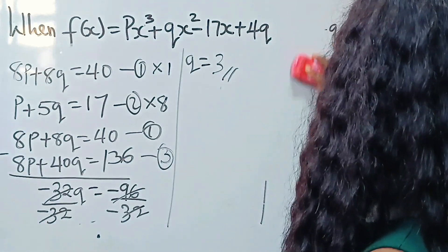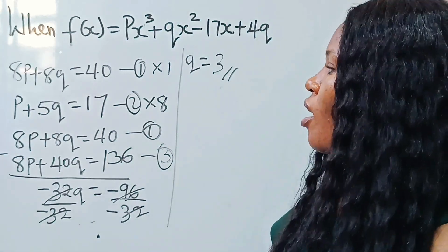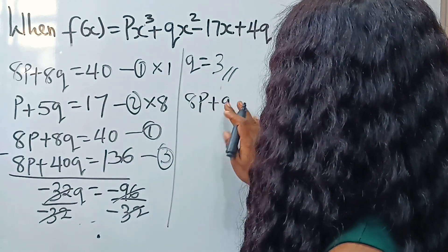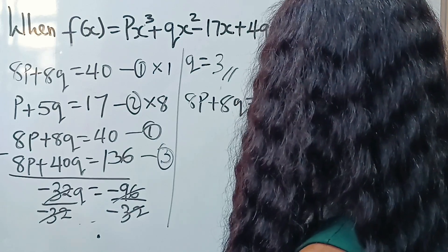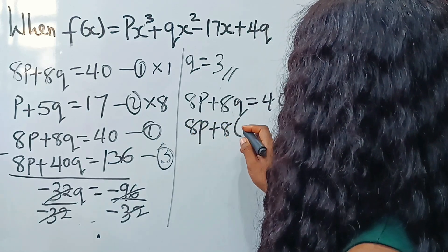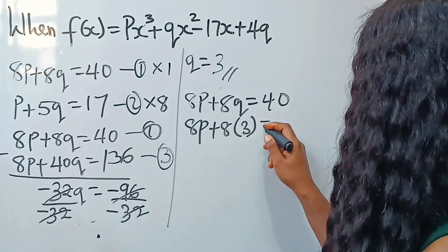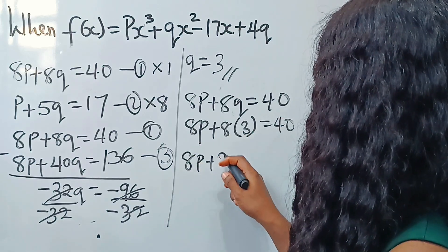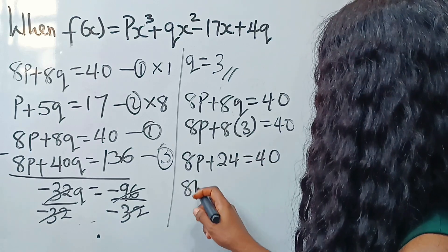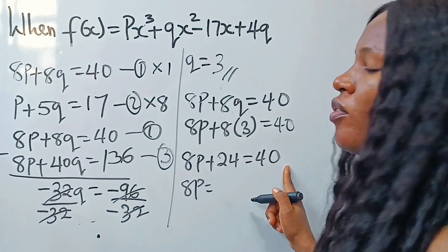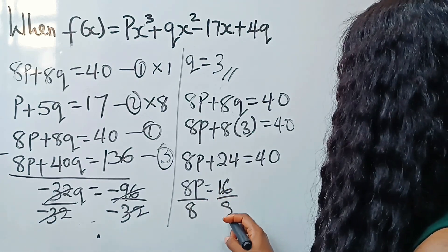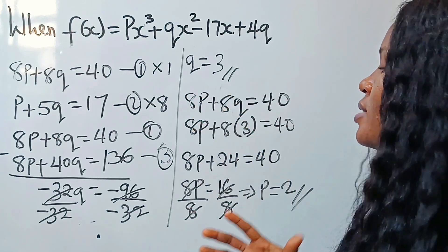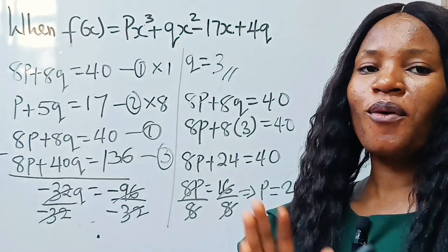Now we solve for p using our first equation: 8p plus 8q equals 40. Substituting q equals 3: 8p plus 8 times 3 equals 40, so 8p plus 24 equals 40, giving 8p equals 16, and dividing by 8 we get p equals 2. So our final answers are q equals 3 and p equals 2.